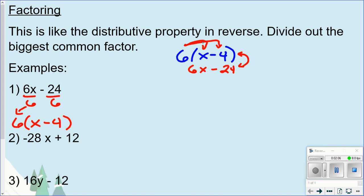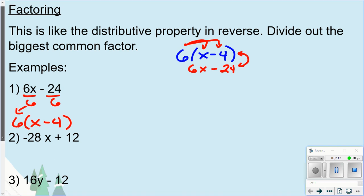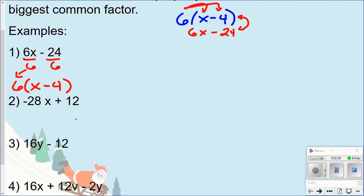So again, the distributive property: you're multiplying something in. With factoring, you're dividing something out. On the second example here, the greatest common factor of 28 and 12 would be 4, so I can divide each of those by 4. Bring my 4 out to the front. Negative 28x divided by 4 is negative 7x, and 12 divided by 4 is 3. And that's your factored answer.